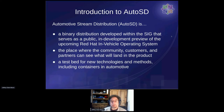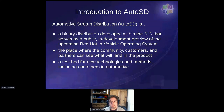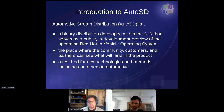The Automotive Stream Distribution is a binary distribution developed within this SIG. It serves as a public in-development preview of the upcoming Red Hat in-vehicle operating system, in the same way that CentOS Stream provides a view of the next version of Red Hat Enterprise Linux. We welcome participation from anybody in this SIG. It will also function as a testbed for new technologies and methods, including containers and automotive, which we will get to in a few minutes.